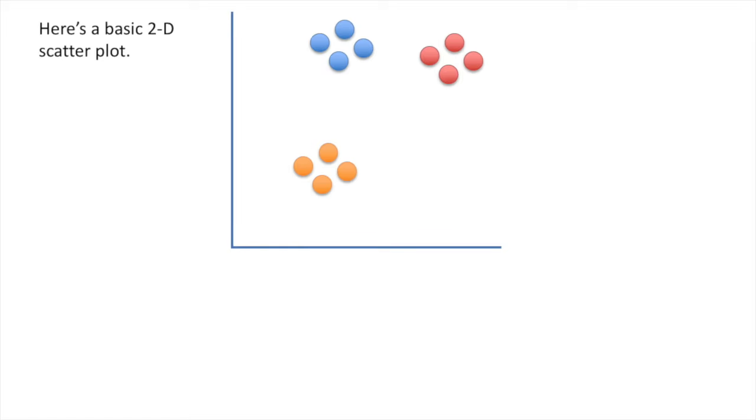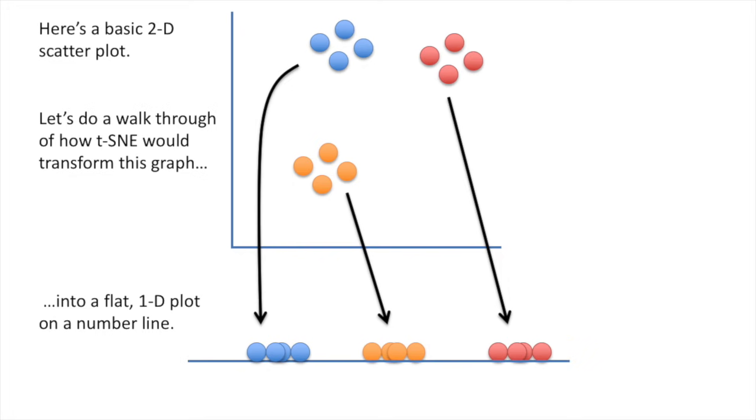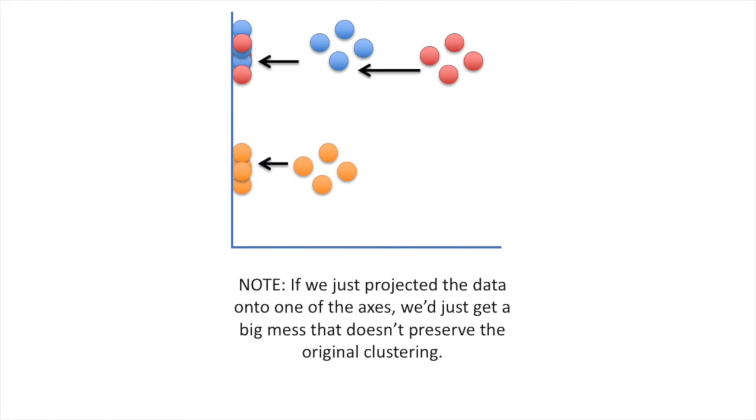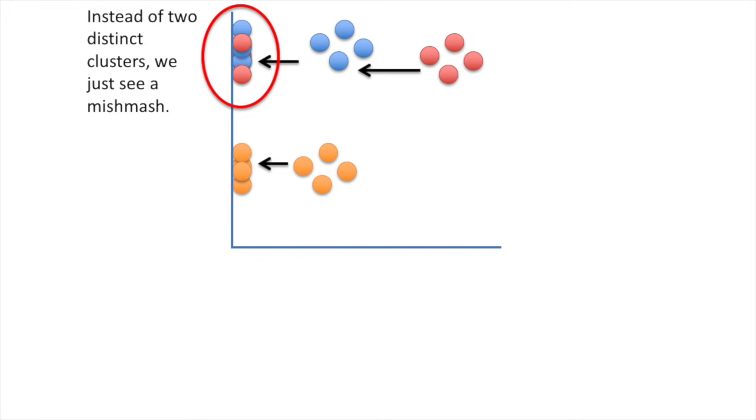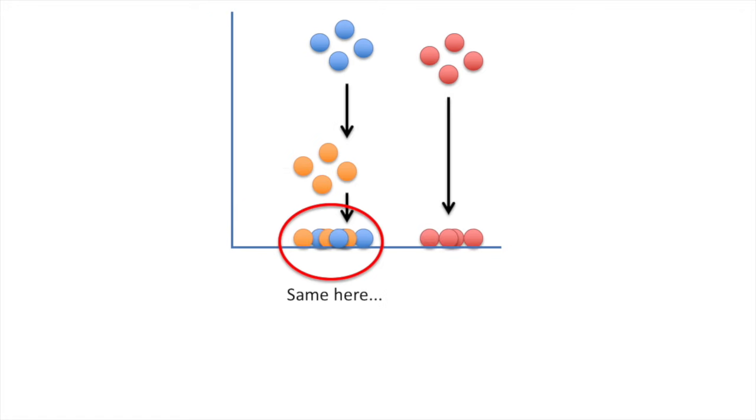Here's a basic 2D scatterplot. Let's do a walkthrough of how t-SNE would transform this graph into a flat, one-dimensional plot on a number line. I'm going to use this super simple example to explain the concepts so that when you see it applied to a much larger, much more complex data set, you'll still know how that graph was drawn. Note, if we just projected the data onto one of the axes, we just get a big mess that doesn't preserve the original clustering.